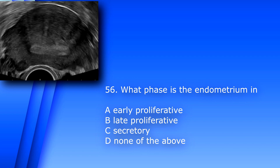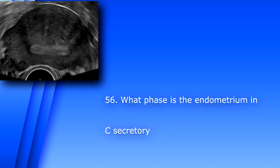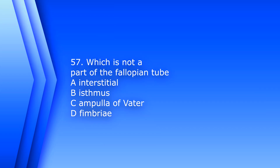Question 56. What phase is the endometrium in? A. Early proliferative, B. Late proliferative, C. Secretory, D. None of the above. The answer is C, Secretory. The endometrium is thick and hyperechoic.